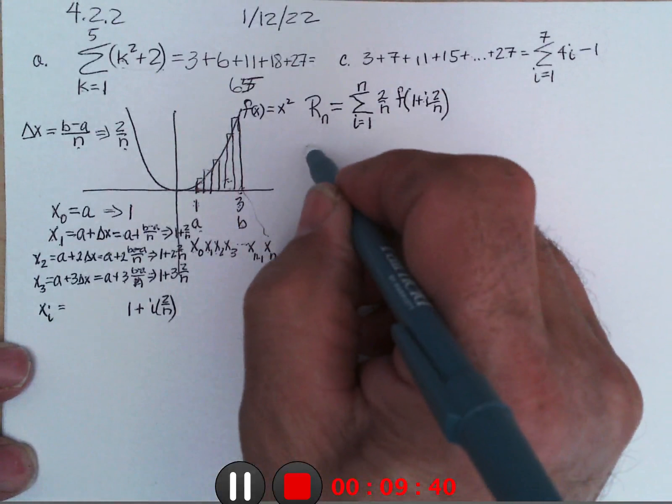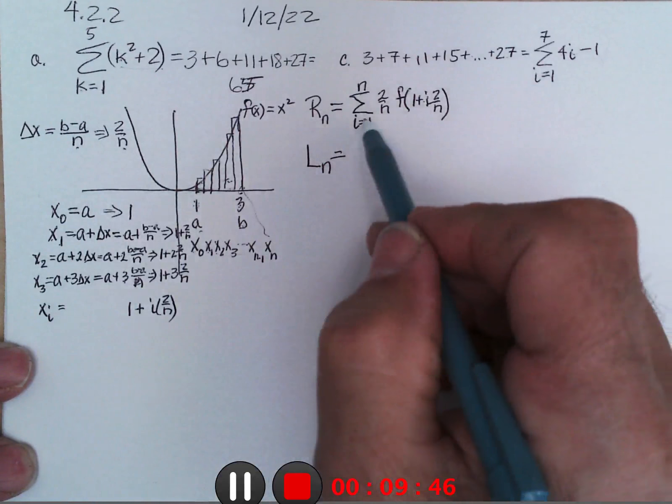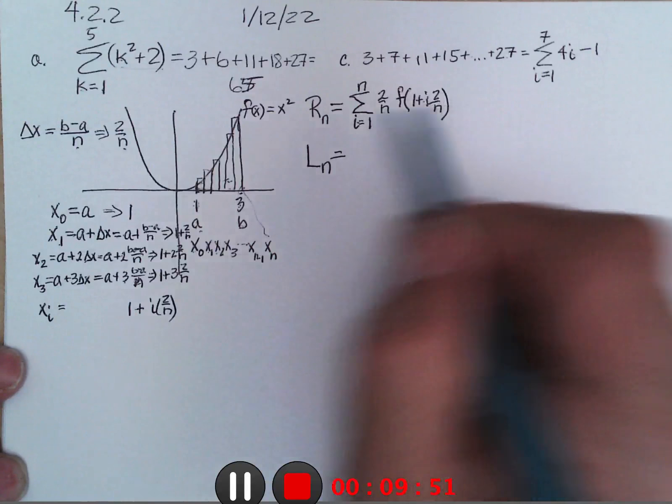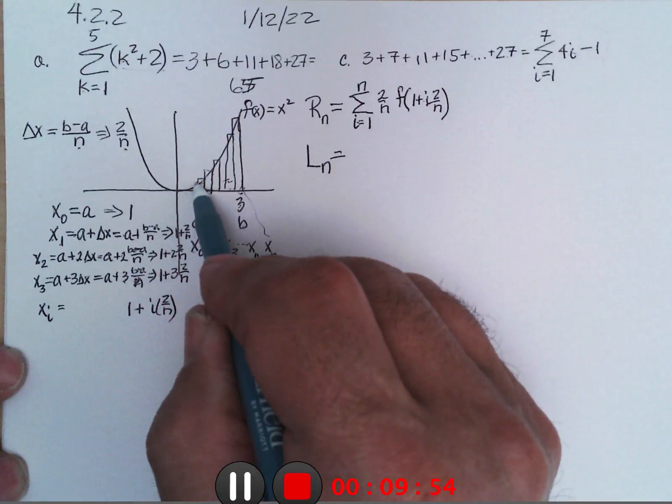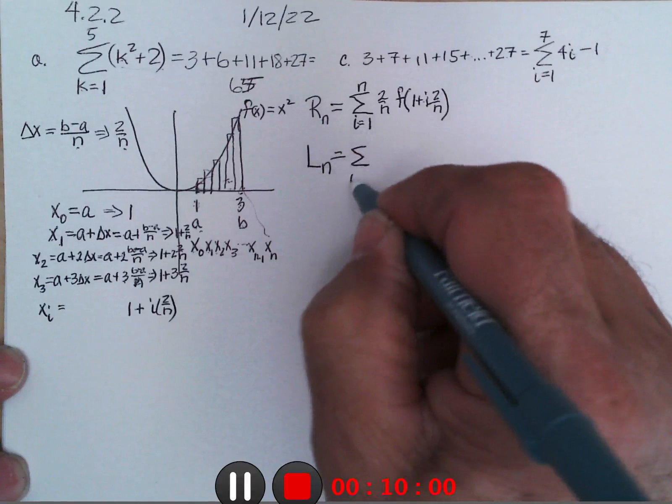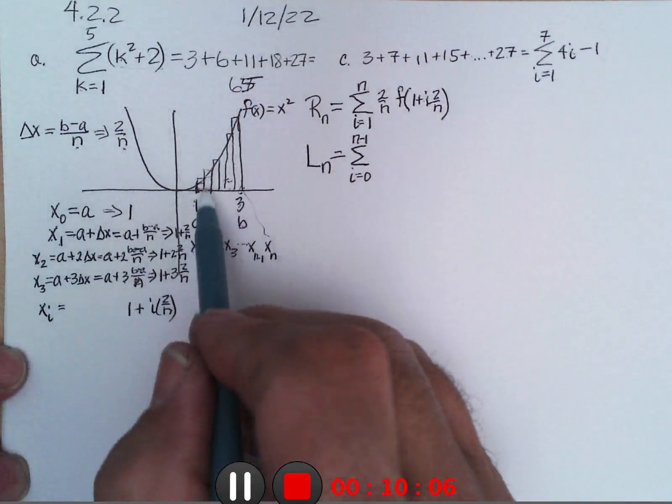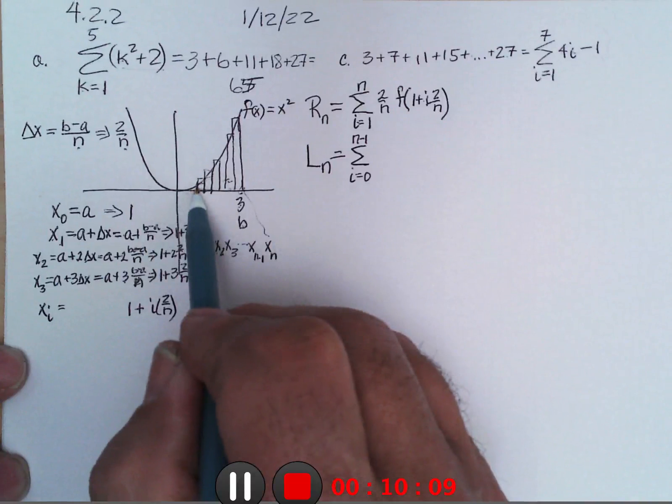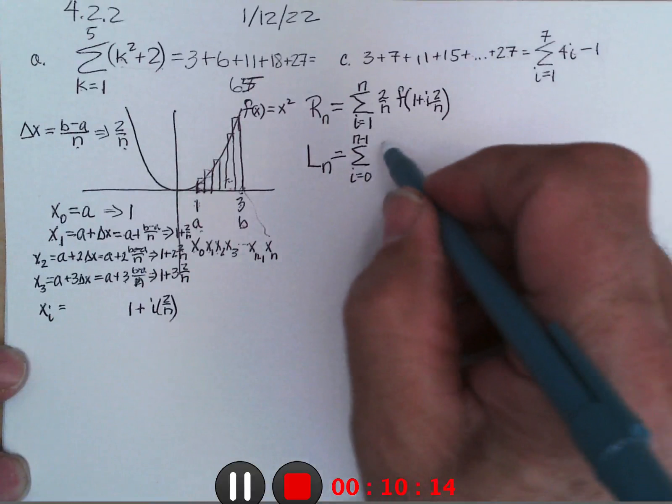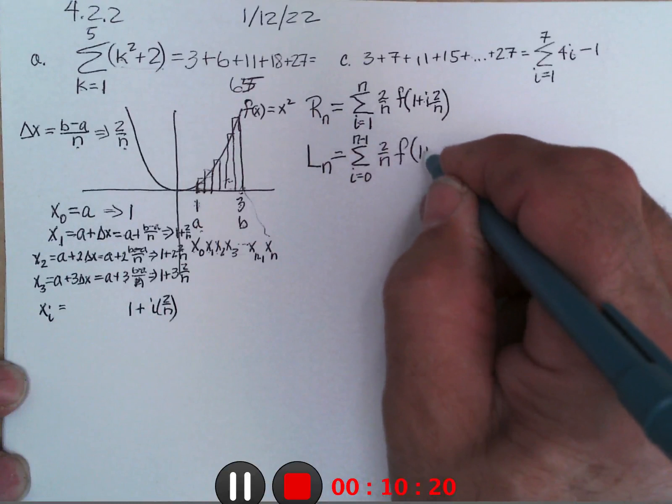If I had to do left ones, well then everything is going to be the same except that I want to not do 1 width over. I want to start counting right from here, the height there, the height there. So I can do that by just saying let i go from 0 to n minus 1. Instead of doing from 1 to n, we'd do from 0 to n minus 1. And so it would be 2 over n, f of 1 plus i times 2 over n.